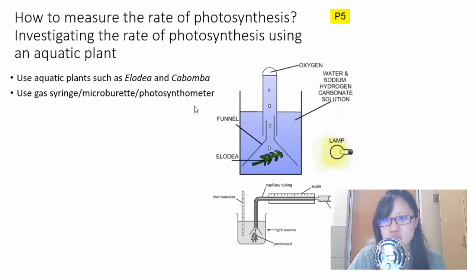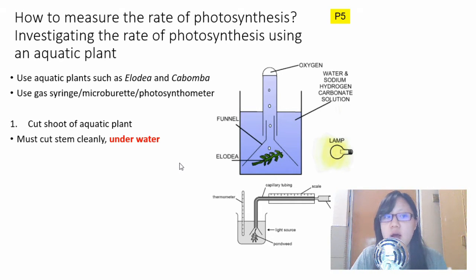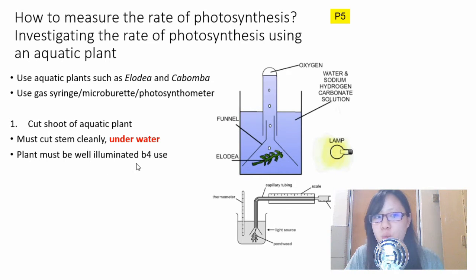This is a Paper 5 question, so pay attention. These are the steps to investigate the rate of photosynthesis. Number one, we use aquatic plants, so cut a shoot of aquatic plant cleanly, underwater, probably slanting. This is to avoid formation of air bubbles in the xylem which may affect the rate of photosynthesis and transpiration. Make sure the plant is well illuminated before use so it won't die. Keep it alive.